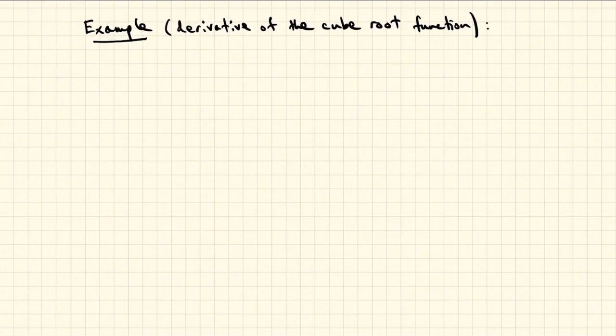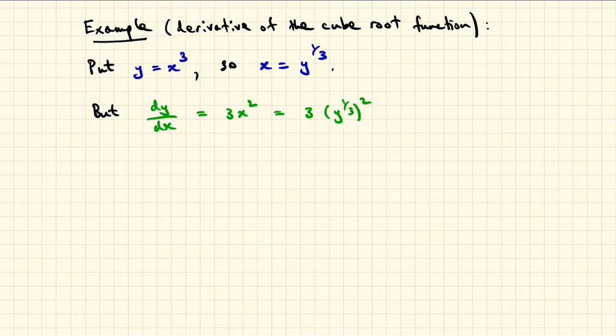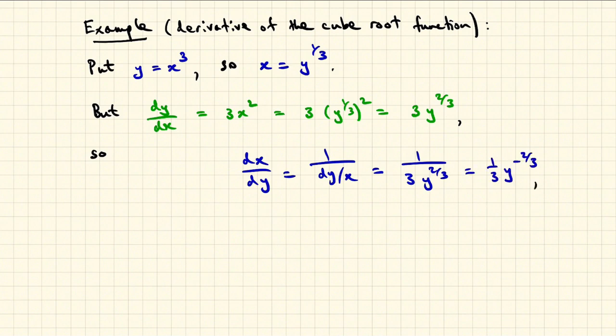Let's finish by differentiating the cube root function using this inversion trick. Put y equals x cubed, so x becomes the cube root of y. But we proved a while ago that dy dx is 3x squared, which becomes 3 times the square of y to the third, which is 3 times y to the 2 thirds. So flipping the derivative over, we get dx dy is 1 over 3 times y to the 2 thirds, which can be rewritten as 1 third of y to the minus 2 thirds.